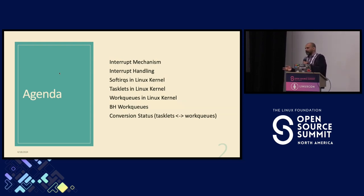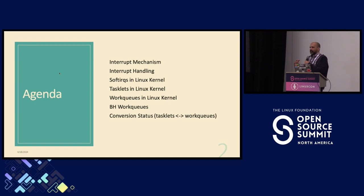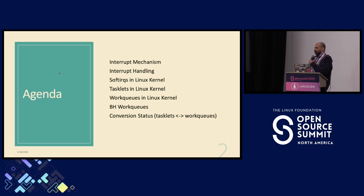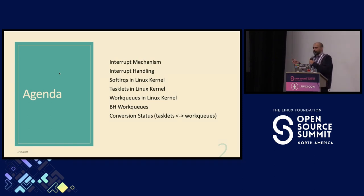Then we'll talk about interrupt handling — I'll talk a little bit about soft IRQs and what they are, and some of the soft IRQs in the current kernel. Then we'll talk about tasklets — the shortcomings of tasklets and why we're trying to remove them. Then we'll talk about work queues, which have been in the kernel since around 2.5.36 or 2.5.41. They've gone through a lot of changes. Finally, we'll talk about bottom half work queues — the new thing being introduced — and then the status of the work we've been doing.